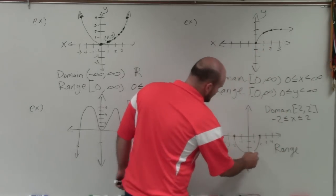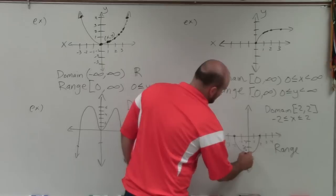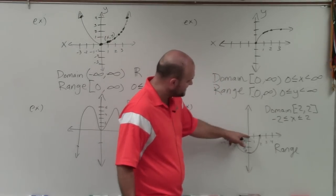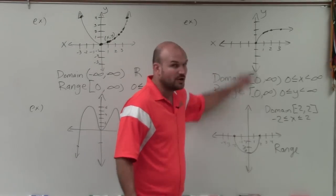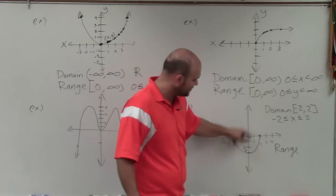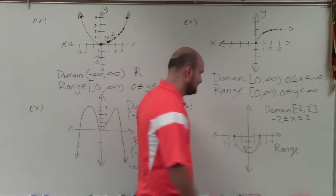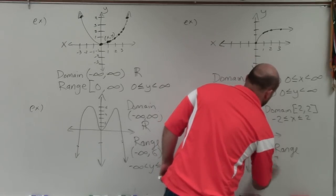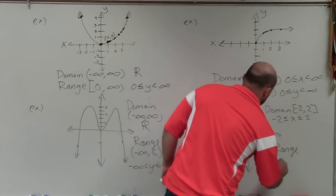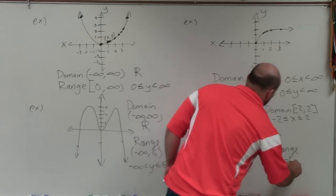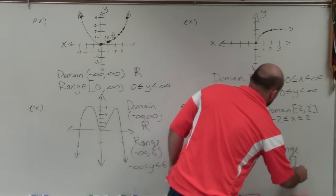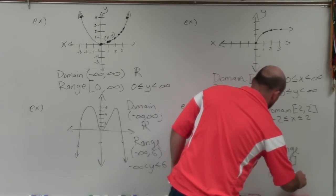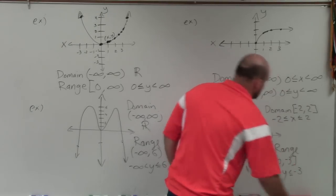The range is only between the points 0 and negative 3. It doesn't go any higher than 0, and it doesn't go any lower than negative 3. So that's going to be between negative 3 and 0, or negative 3 is less than or equal to y, which is less than or equal to 0.